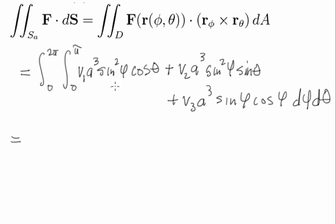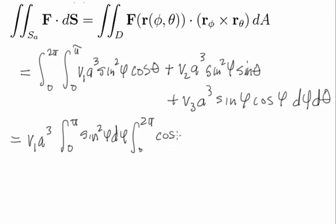So if I look at the first term, I have a product of functions of phi and theta, so I'm going to get v1 a cubed and then the integral zero to pi of sine squared phi d phi, and then times the integral zero to two pi of cosine theta d theta.